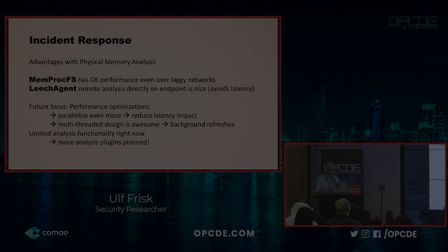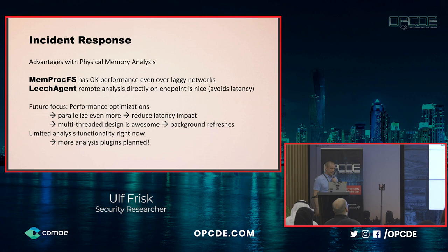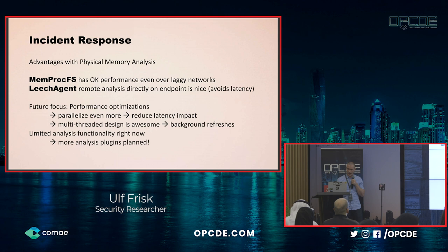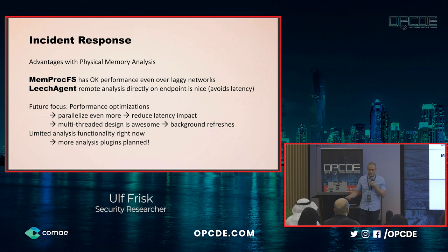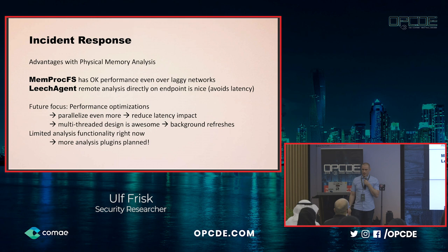There are really big advantages to doing physical memory analysis for incident response. You might already be familiar with Volshell by Matt, or the more traditional approach with Volatility — both those tools are super awesome. The Memory Process File System is not really meant to replace them; it's more meant to act as a platform to do things with your own favorite tools. It has okay performance even over laggy networks, and if you use the agent, you can do the remote analysis directly on the remote endpoint, which is super nice as it avoids both latency and bandwidth.